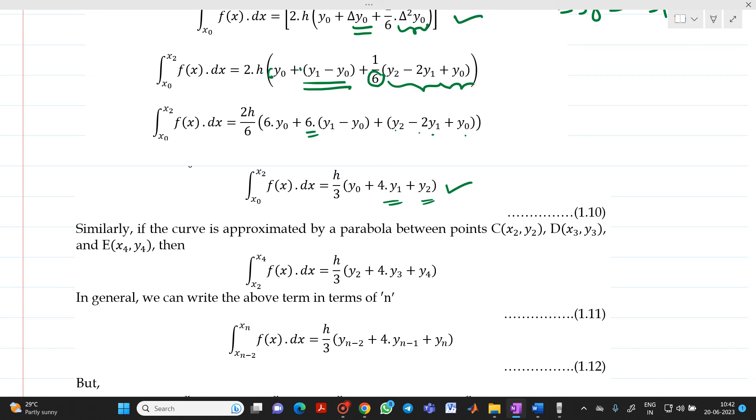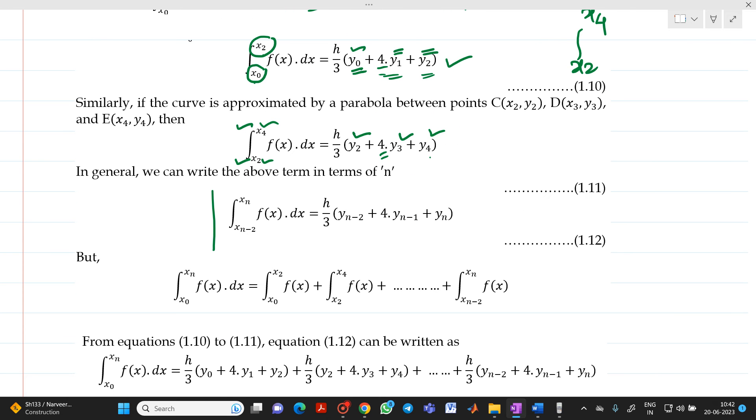Treat this as the next equation. Now, here we have seen that we have limits from x0 to x2. But it may be from x2 to x4 also. So, if we have x0 to x2, how we have written here? It will be y0, 4 into y1 and y2. So, similarly, from x2 to x4, how we can write? If here is x0, we have written y0. So, if here is x2, we have to write y2. Next will be y3 which will be multiplied by 4 and the upper limit is y4. So, in general, we can write a formula for n number of terms which is indicated by this equation.